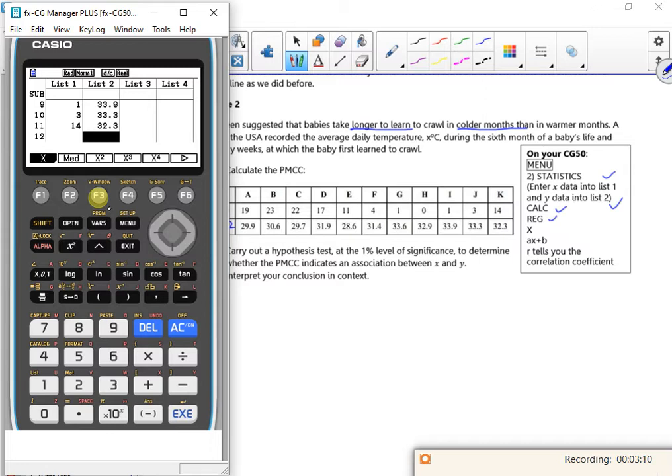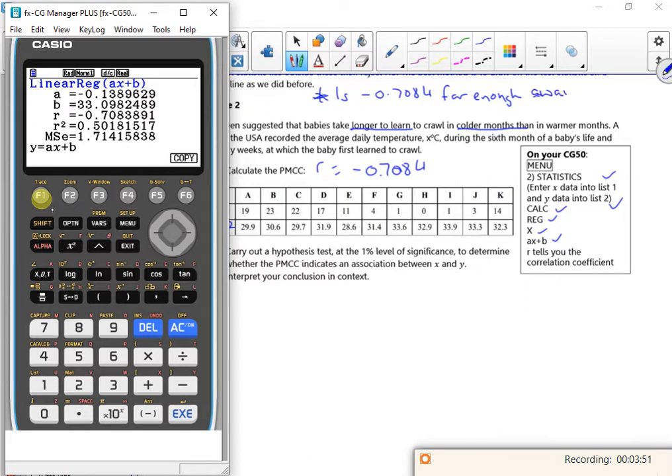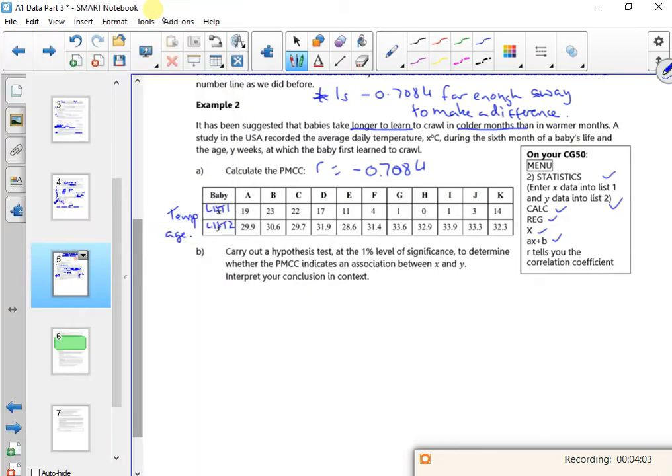So it says here, enter the x-data into List 1, enter the y-data into List 2. Calculate and then F3 for Regression. So F3 for Regression, F1 and then F1. And it gives us an R value, so we know that the R value is minus 0.7084. I want to see if that is far enough from the critical values in the table for it to make a difference. That's what I'm doing.